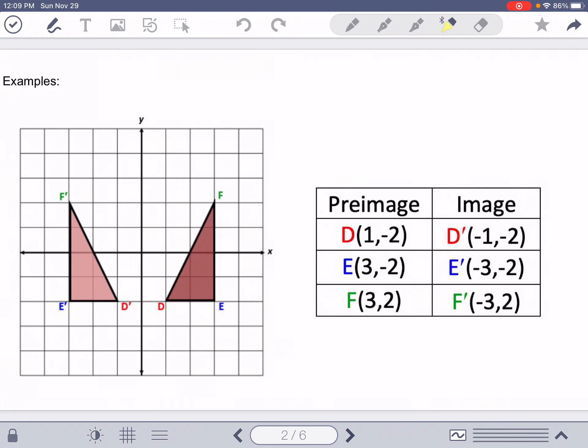So let's look at a couple examples here. What we started with was this image that I'm highlighting in yellow. Point D was 1, negative 2. Point E is 3, negative 2. And F is 3, 2.